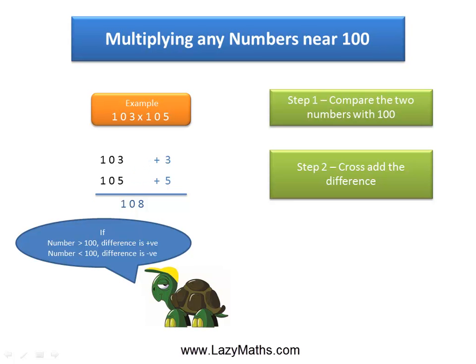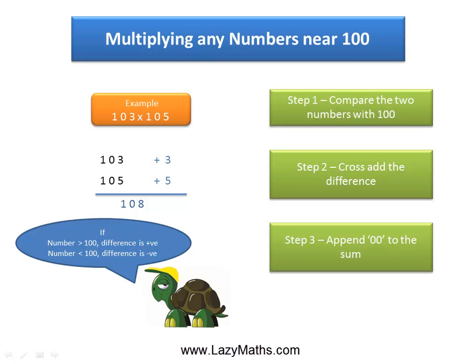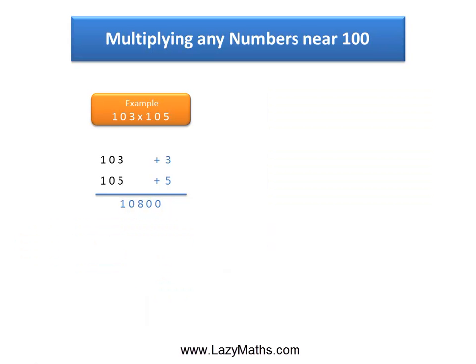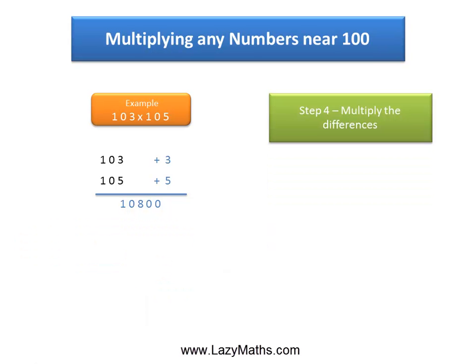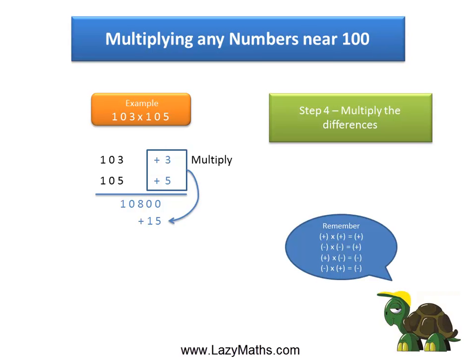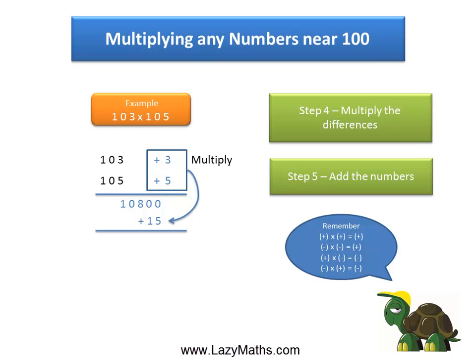The next step is to append two zeros to 108 to make it 10,800. Now, the last step is to simply multiply the differences, which are +3 and +5. We multiply positive 3 with positive 5 and get positive 15. We add this 15 to 10,800 to get 10,815 as our final answer.